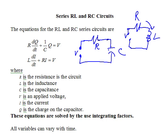For the RL circuit, you look for the current in the circuit. For the RC circuit, the differential equation is in terms of Q, which is the charge on the capacitor. So these variables are listed here.